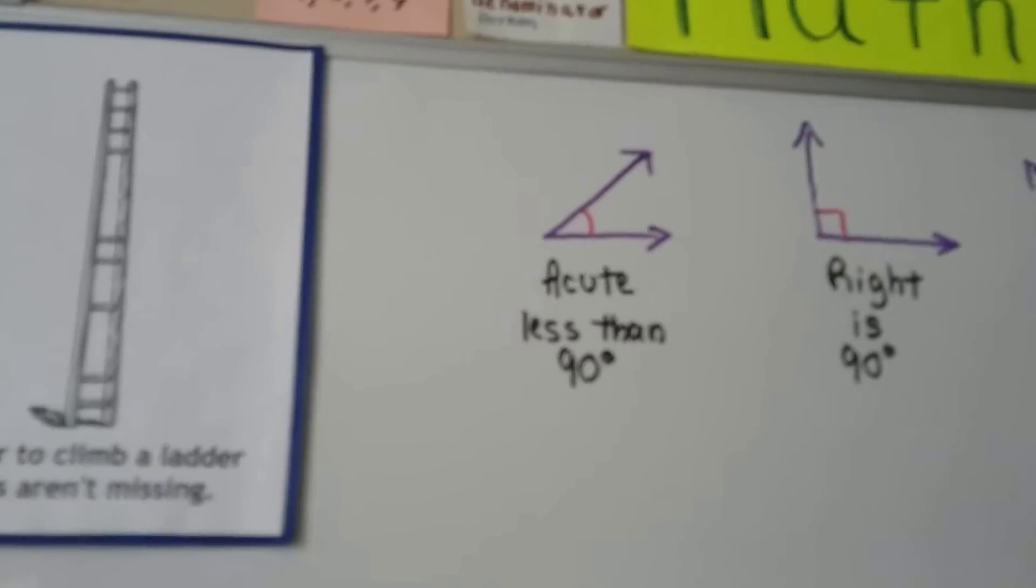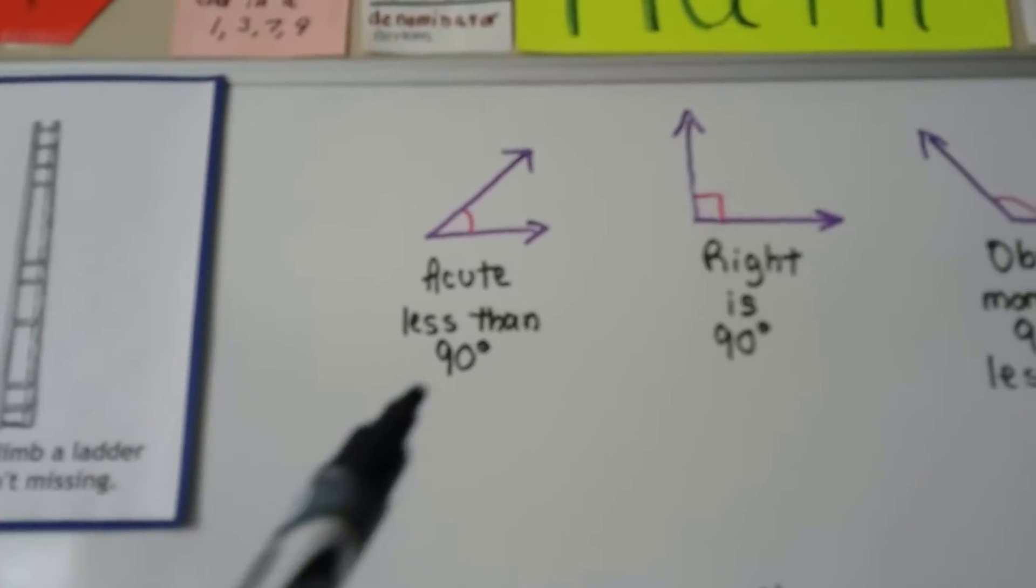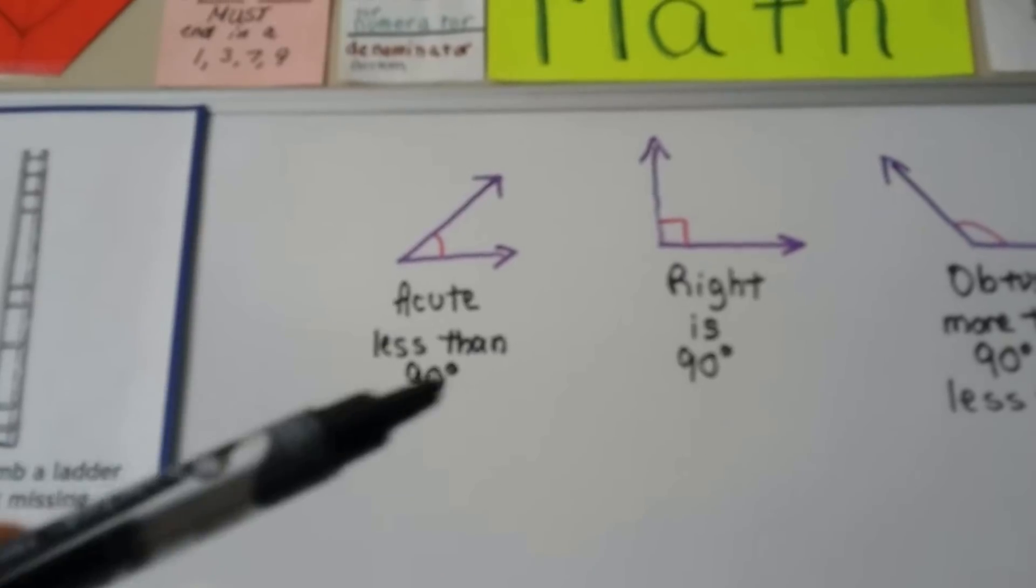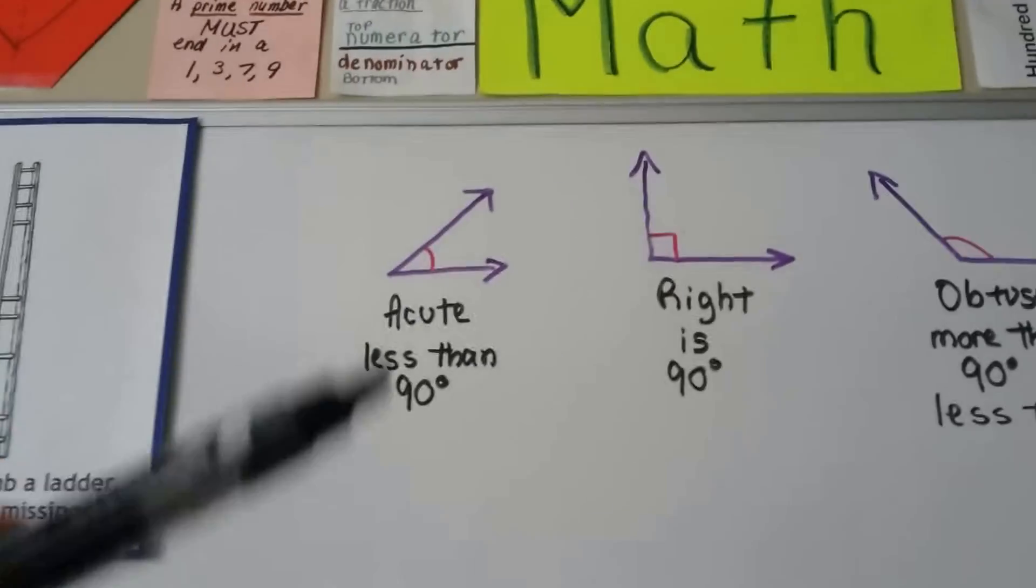There's different types of angles. There's acute angles and they're less than 90 degrees. And the way I remember them is, out of all the angles, they're the cute little ones. So they're acute.